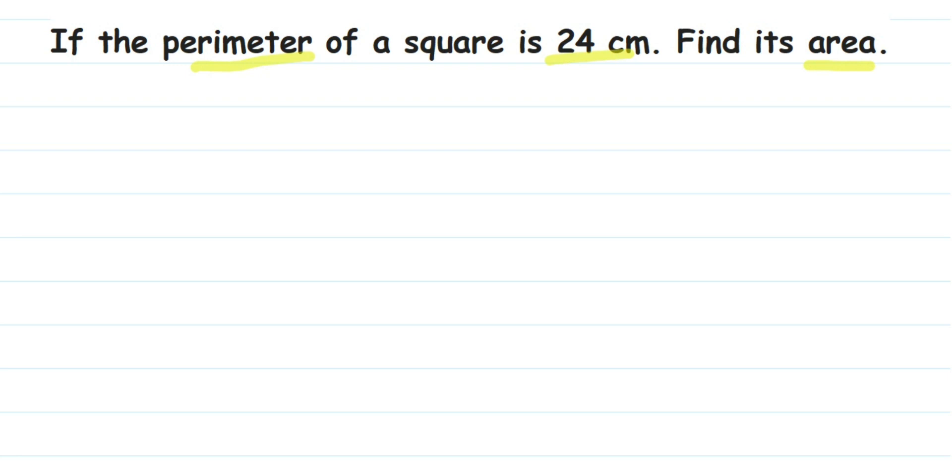So how to find out this side? First we're going to find out the side of the square and then later we're going to find out the area. For that, we're going to use the perimeter of square.